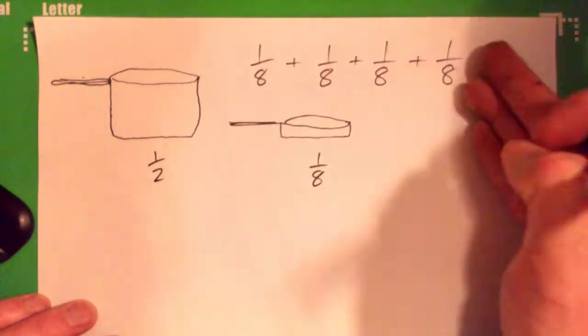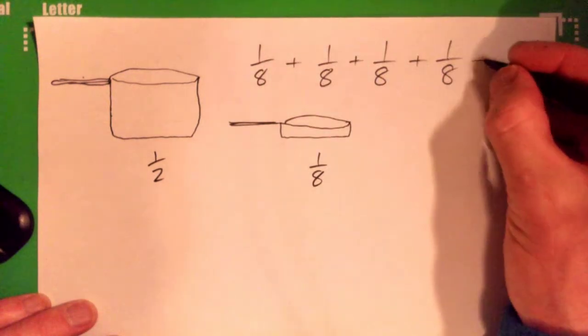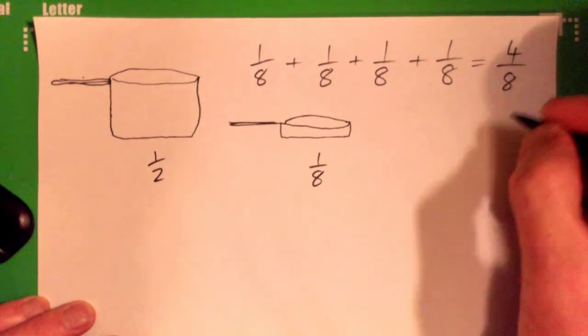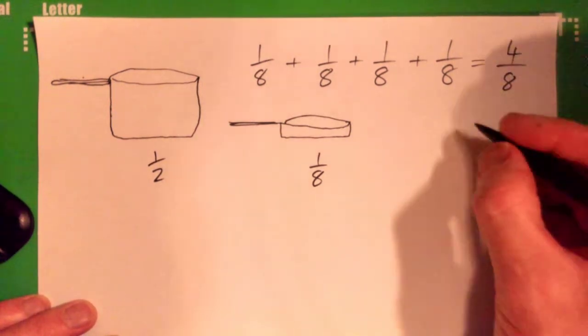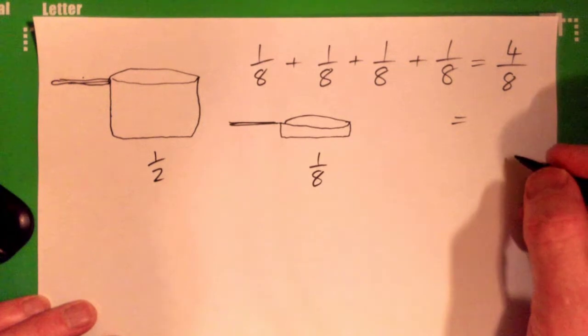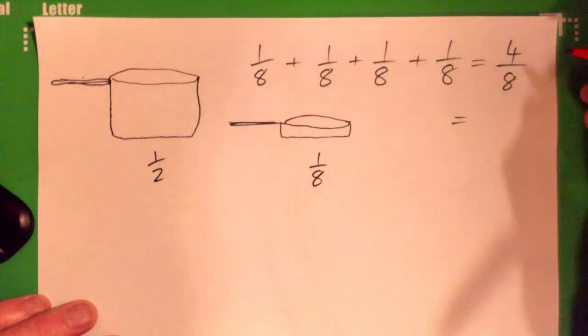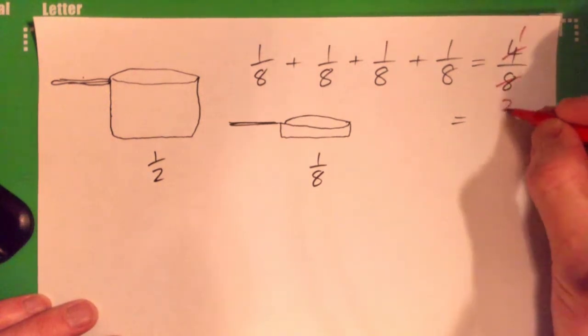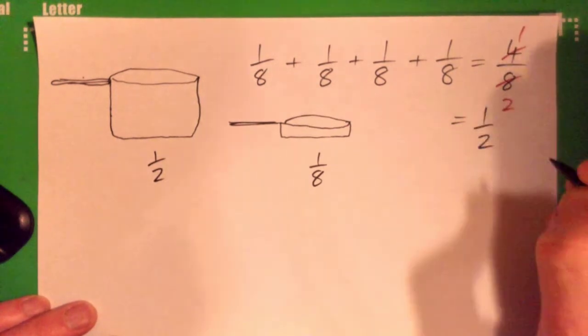Because what's, all four eighths would give us what? Wouldn't that just give us four over eight, right? And simplify four eighths for me. Four into four goes, yeah, four into eight goes, right? So that would give me half, right? Lovely.